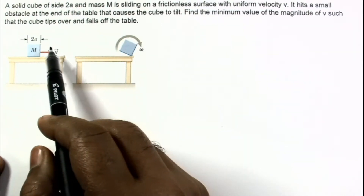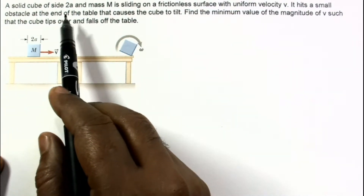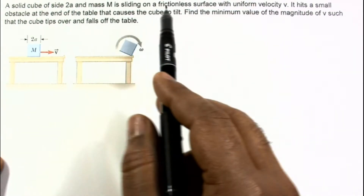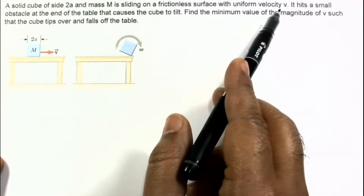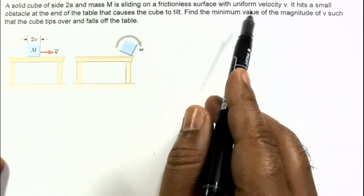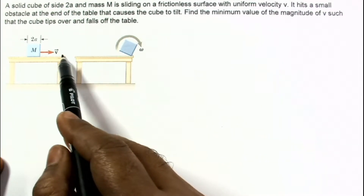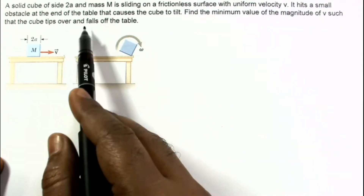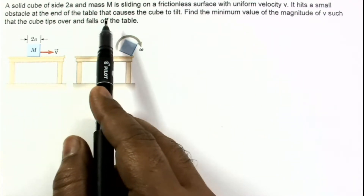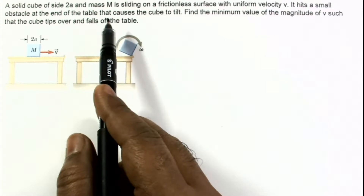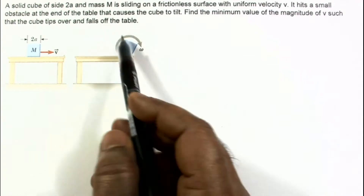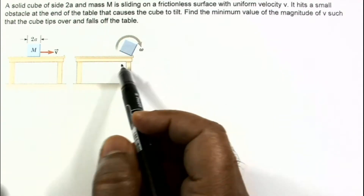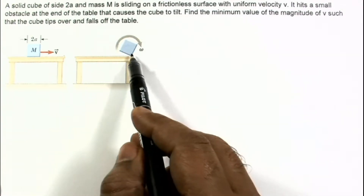A solid cube of side 2a and mass m is sliding on a frictionless surface with uniform velocity v. It hits a small obstacle at the end of the table, as shown in the diagram, that causes the cube to tilt. Find the minimum value of the magnitude of v such that the cube tips over and falls off the table.